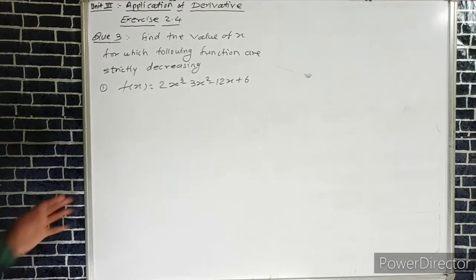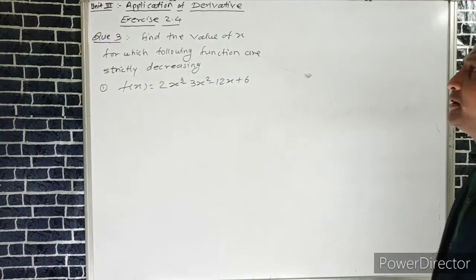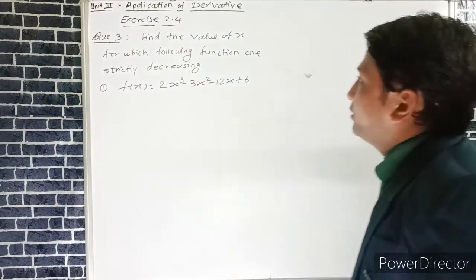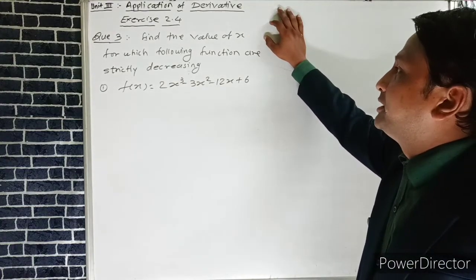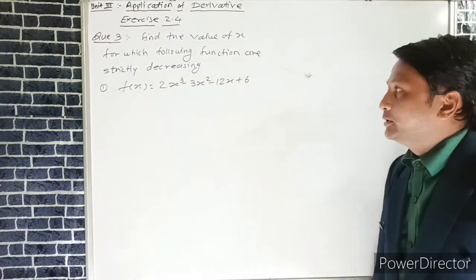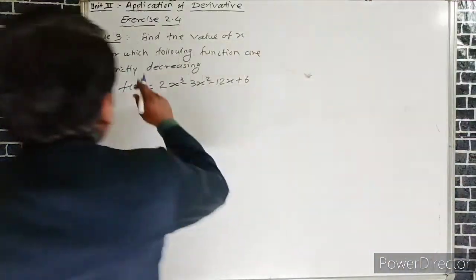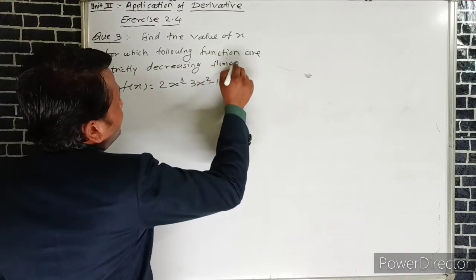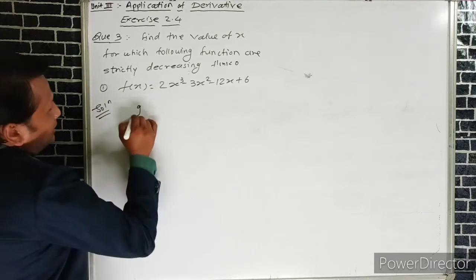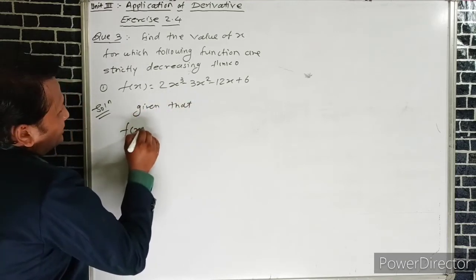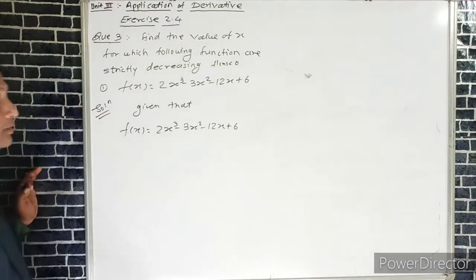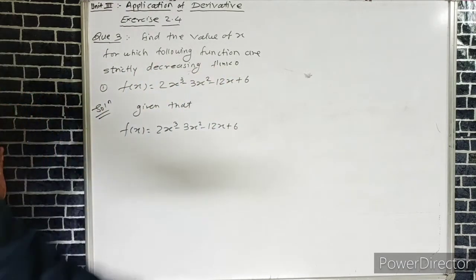Question number 3 is similar to question number 2, but the condition is different — the function is strictly decreasing. We need to find the value of x when the function is strictly decreasing. The first example: f(x) = 2x³ - 3x² - 12x + 6. Since the function is strictly decreasing, f'(x) < 0.